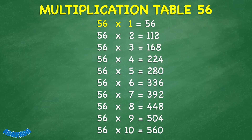56 times 1 equals 56. 56 times 2 equals 112. 56 times 3 equals 168. 56 times 4 equals 224.